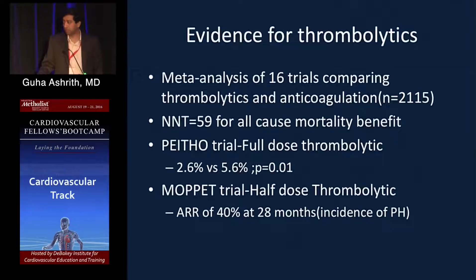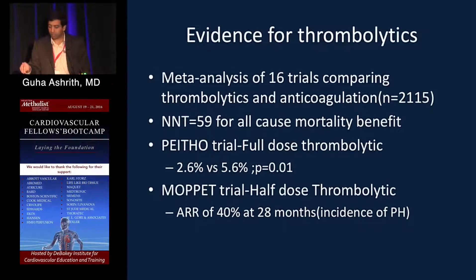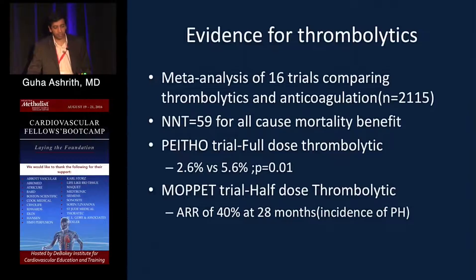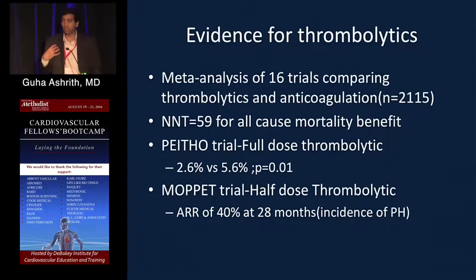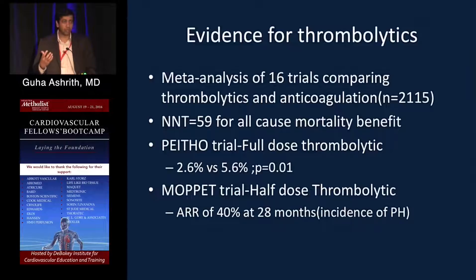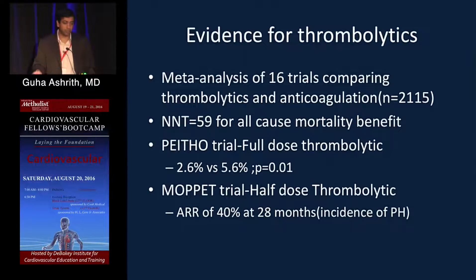The key difference between PEITHO and MOPPET was thrombolytic dosage — MOPPET used half-dose to assess whether hemorrhagic risk could be reduced. However, the trial definitions differed significantly: PEITHO used massive versus submassive PE, while MOPPET used intermediate PE, defined partly by clot burden — whether it occluded 70% of the main PA or both PAs — making head-to-head comparison difficult.